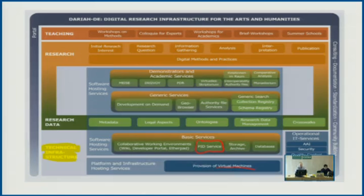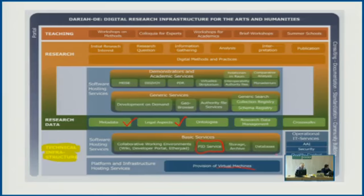The next layer addresses research data — that's even a bit closer to the research we actually wanted to do. This involves metadata, which we talked about a bit yesterday, as well as legal aspects, ontologies, research data management, and crosswalks. It's not always very clear which is which, but we are already in the research layer now.